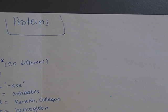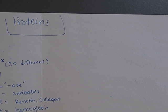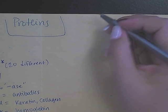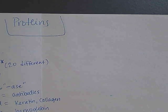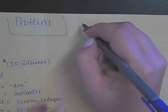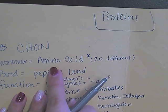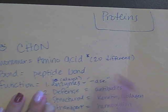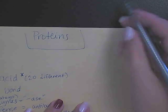With all of these macromolecules, we focus on how structure affects function. In order to do that for proteins, we first have to get into detail about the building blocks — the monomers — which are the amino acids.